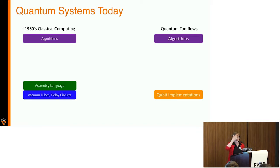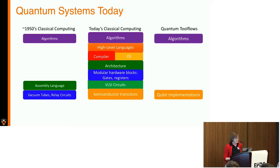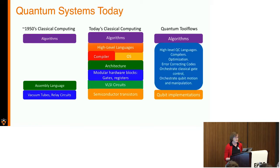If we had sat around and waited to decide that transistors were going to be the right technology before we built the rest of the stack, that probably wouldn't have been wise. Instead, what we did on the classical side was develop a layering strategy over time that looks like the middle view we have. We have the chance now to think about that for the quantum side.